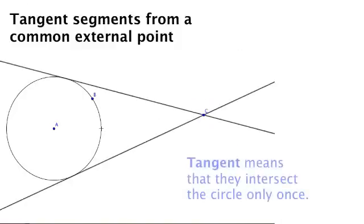Here we have a circle and a point outside of the circle. We'll call this point the external point. And we know that there are two lines that go through this point and are tangent to the circle.